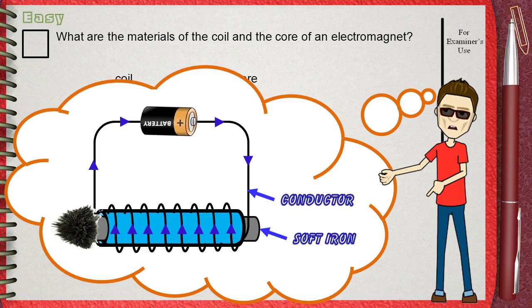Or in other words a magnetic substance which are soft iron, steel, cobalt and nickel. But we said before that the best material for the electromagnet is soft iron.